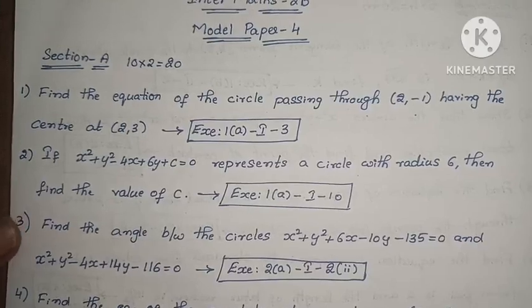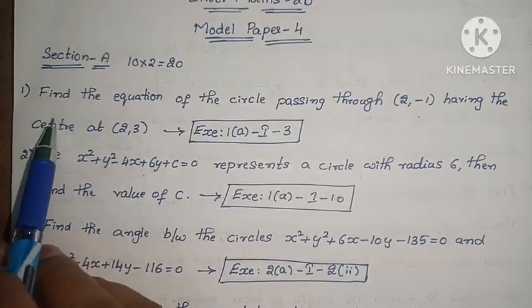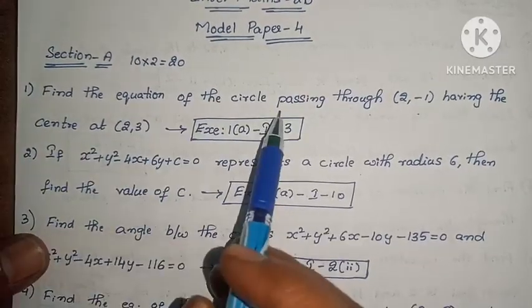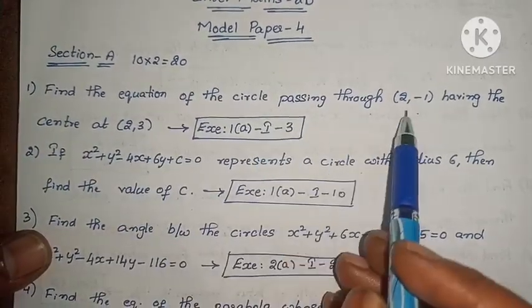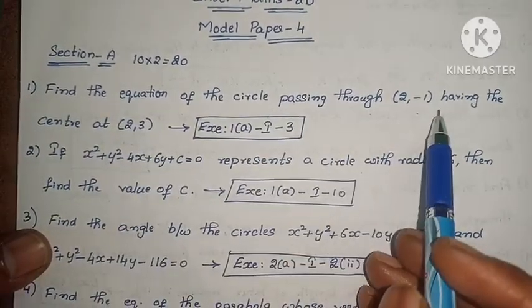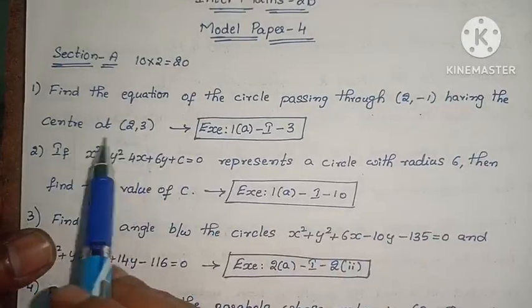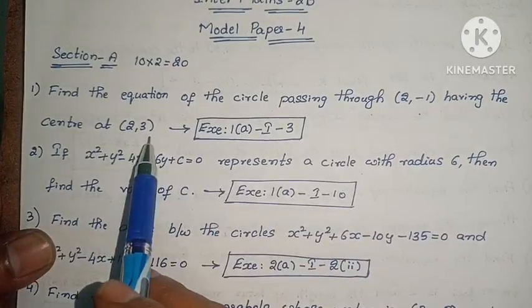First one: find the equation of the circle passing through (2, -1) having the center at (2, 3).